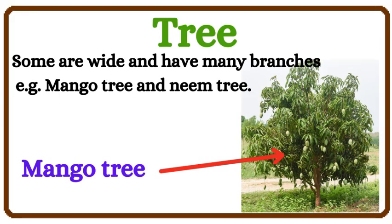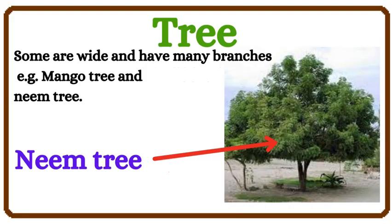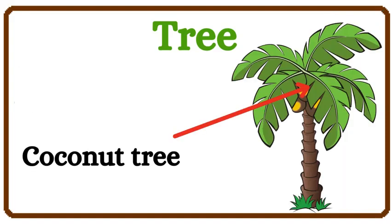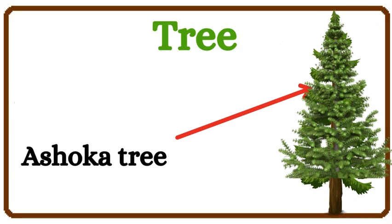Mango Tree, Neem Tree. Some trees grow tall and straight — for example, Coconut tree and Ashoka tree.